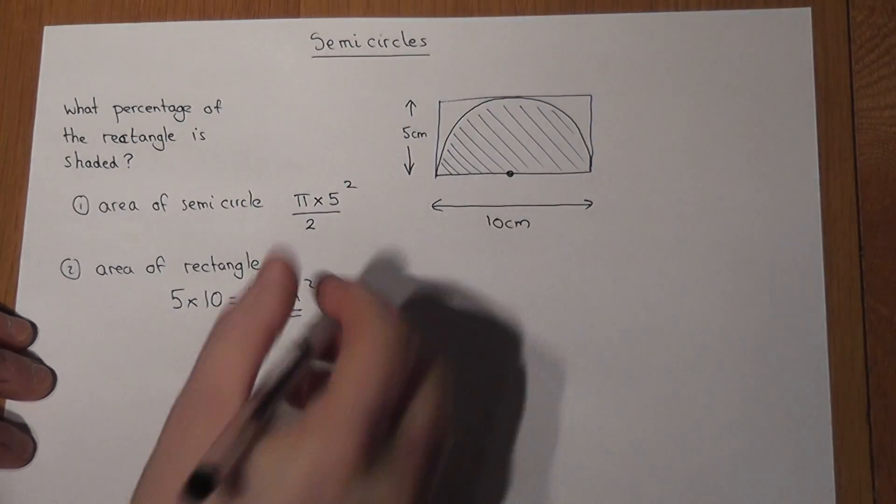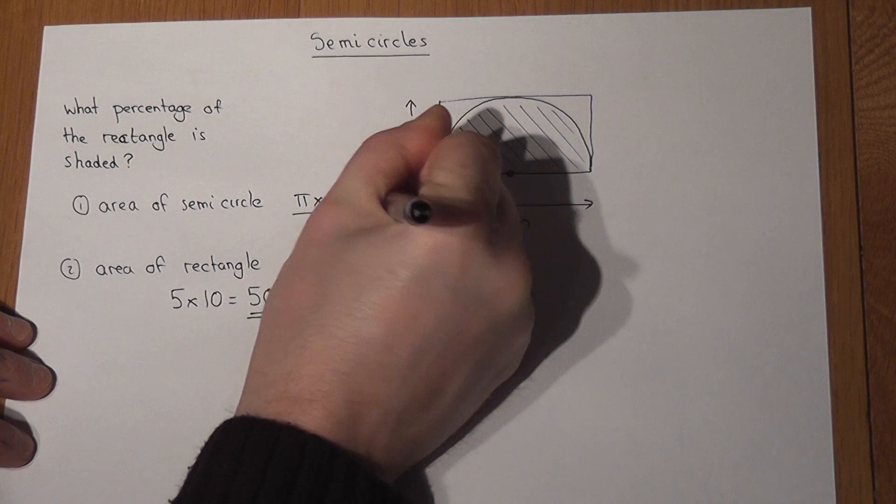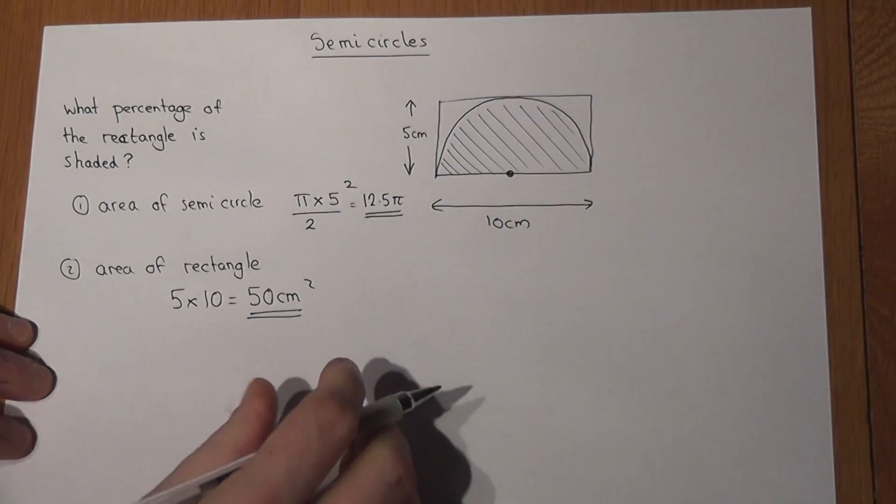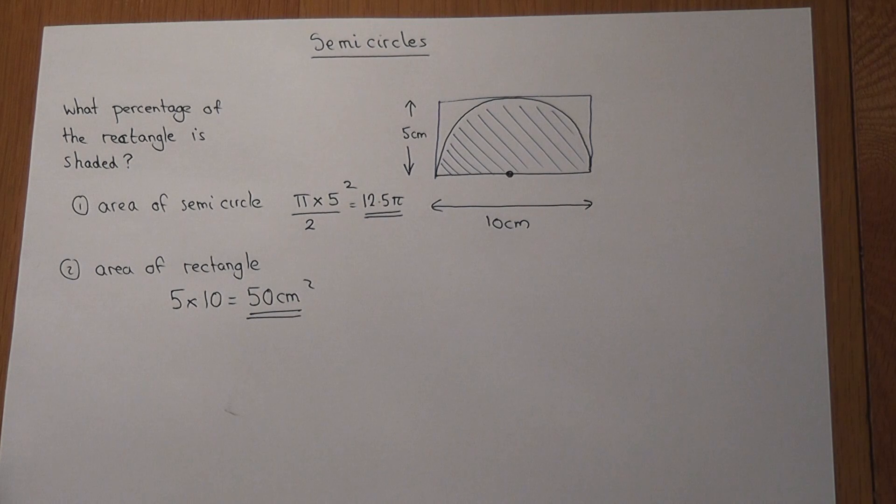25 is 5 squared, so this is 12.5 pi if worked out on the calculator, but in terms of pi.